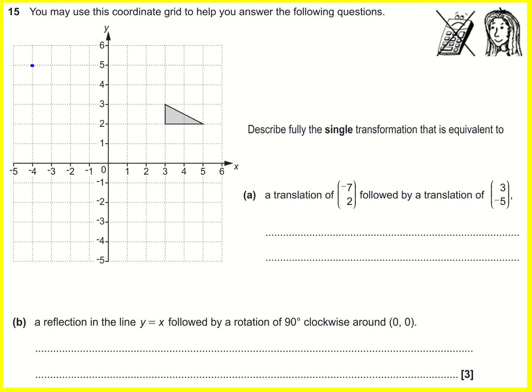And if I want to do three and minus five, then I would go three in the x direction, one, two, three, to here, and then down five - one, two, three, four, five. And that would be just the top left points.